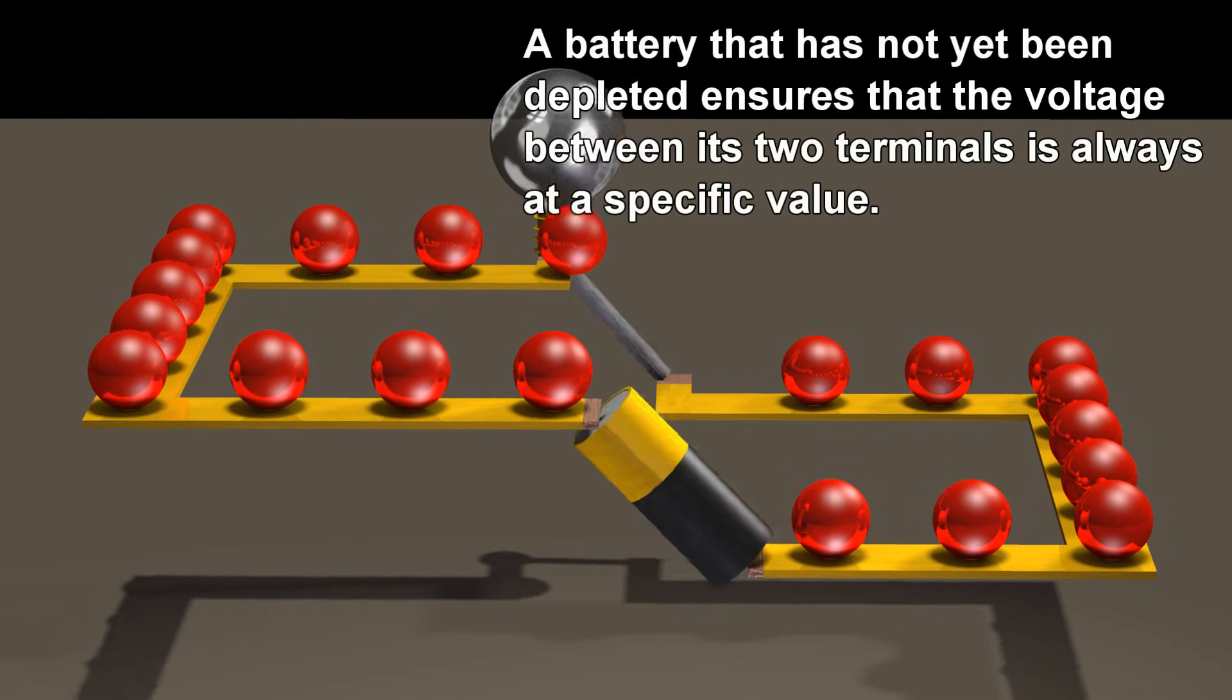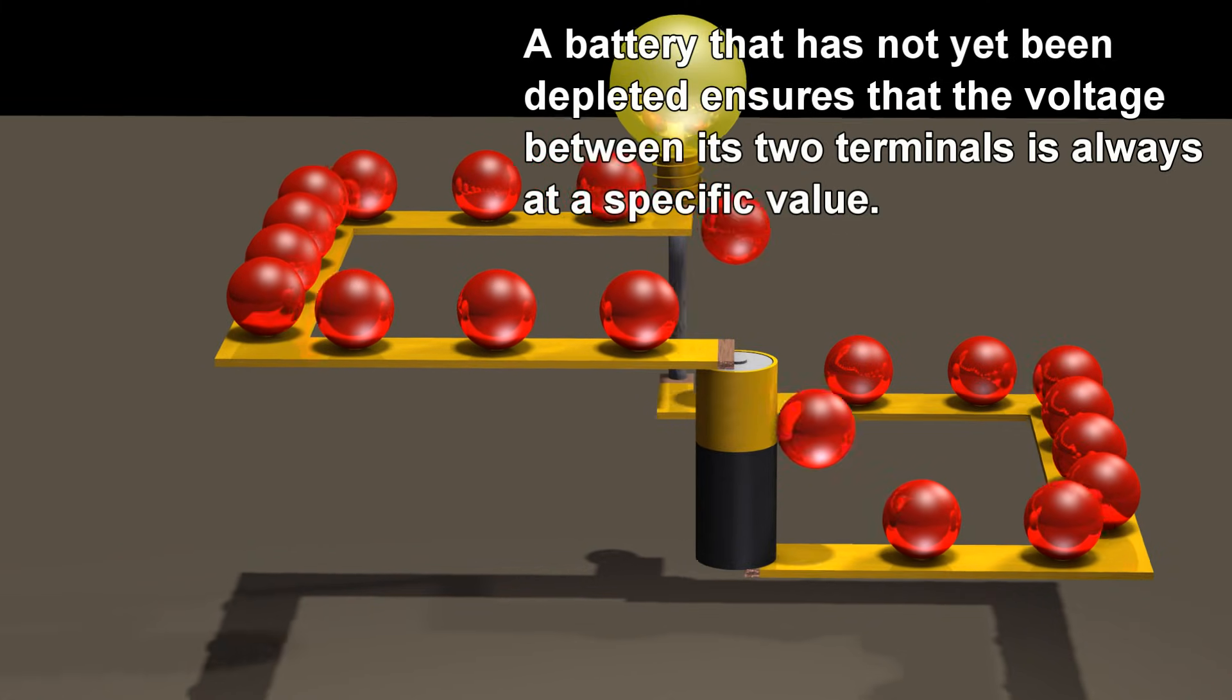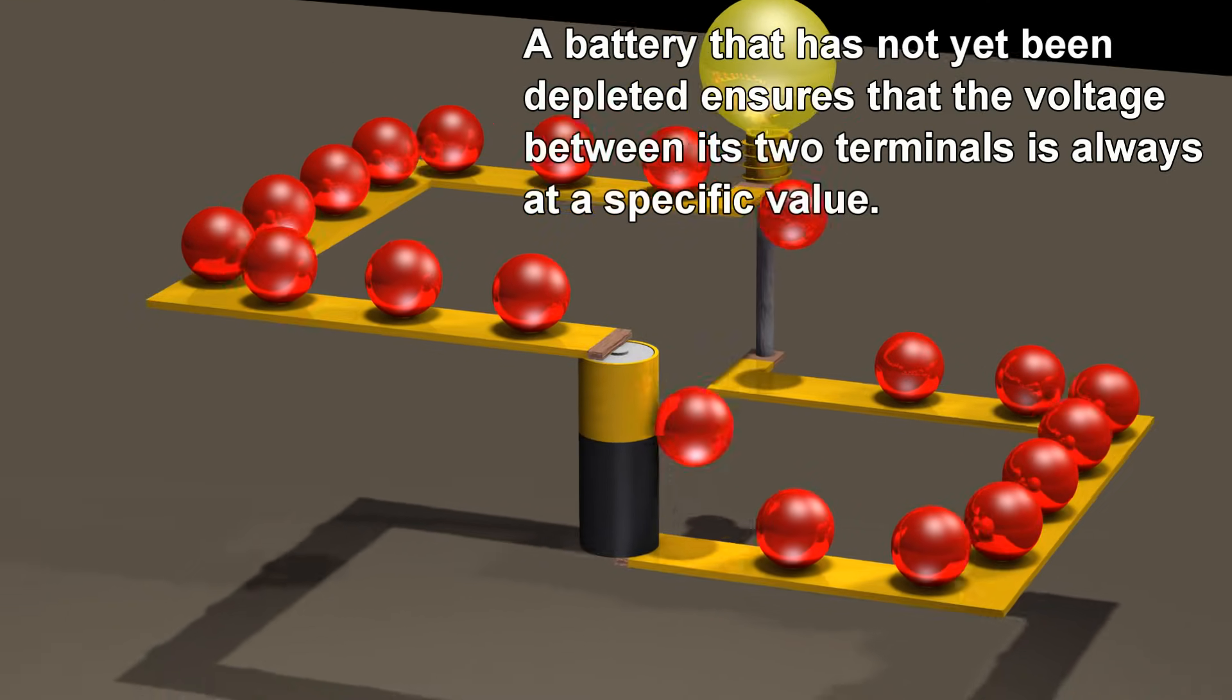A battery that has not yet been depleted ensures that the voltage between its two terminals is always at a specific value.